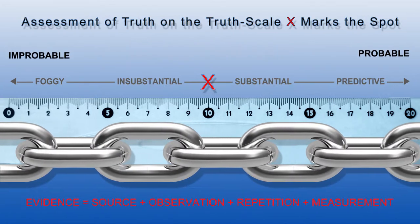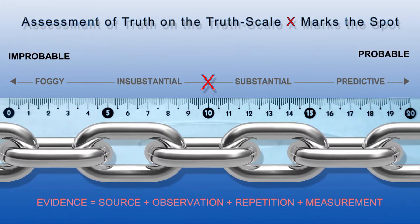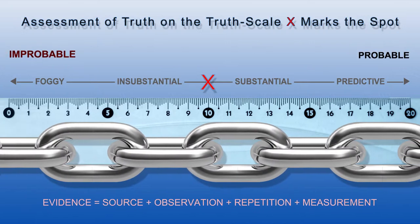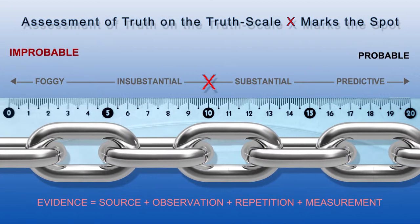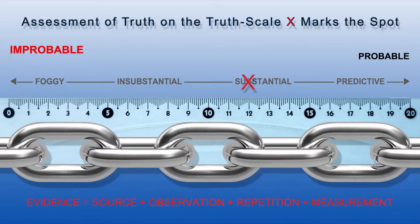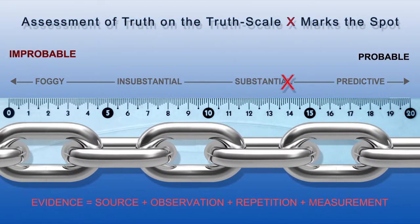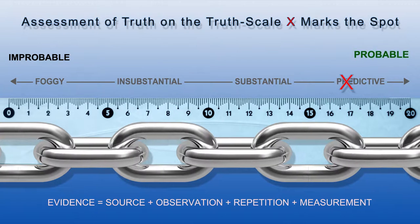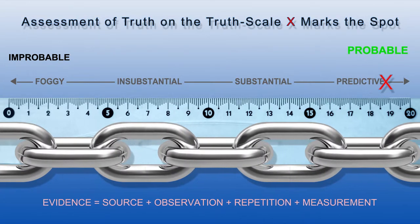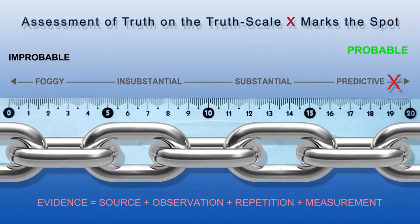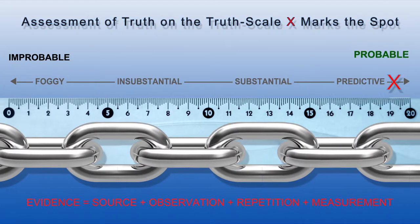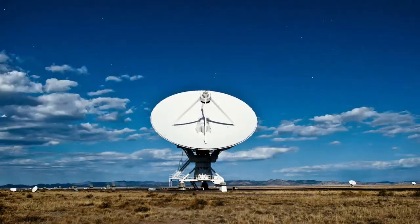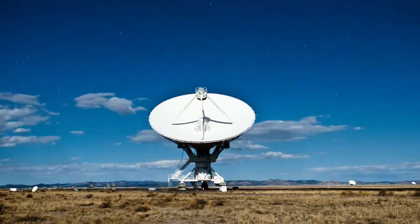This chain of evidence distills and refines truth. Another way of expressing this is that the bending of light due to gravitational effects is highly probable. This places Einstein's great truth high on our truth scale, near the end of the scale where predictions are possible — an additional indicator of a substantial truth.